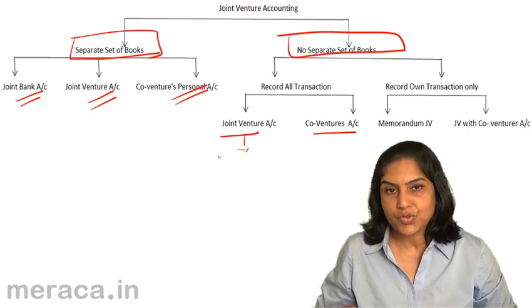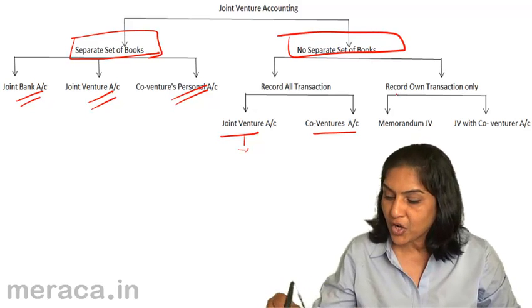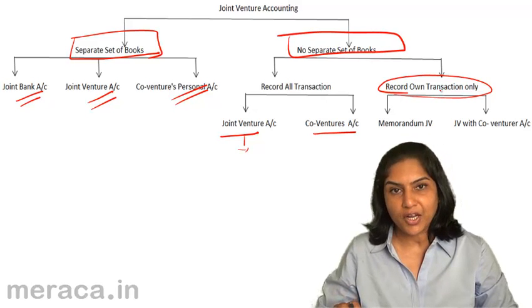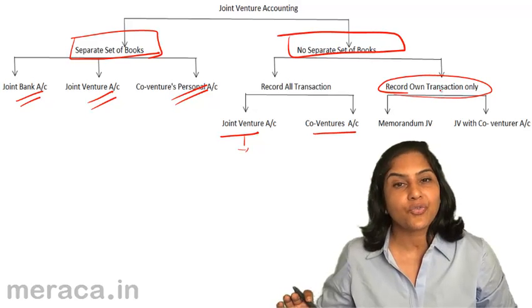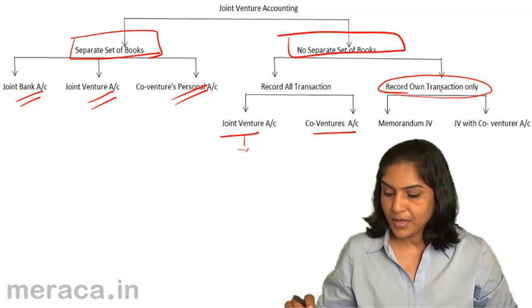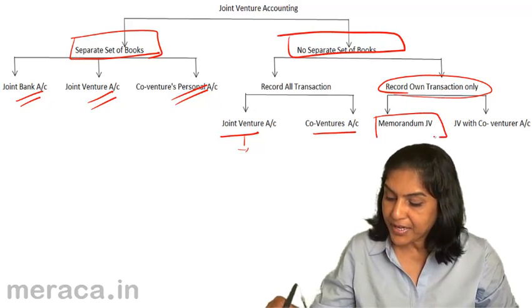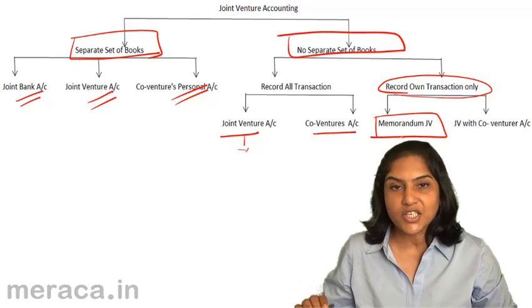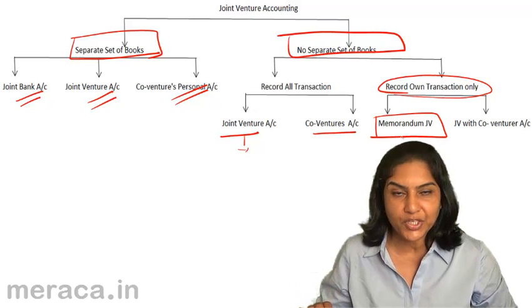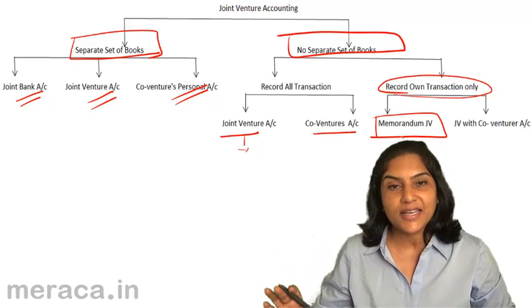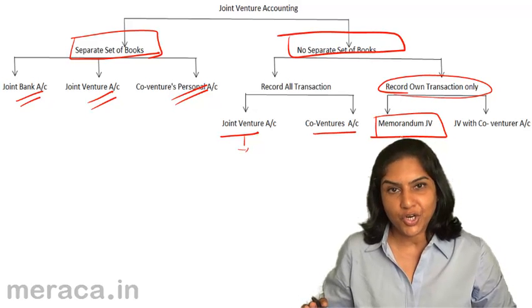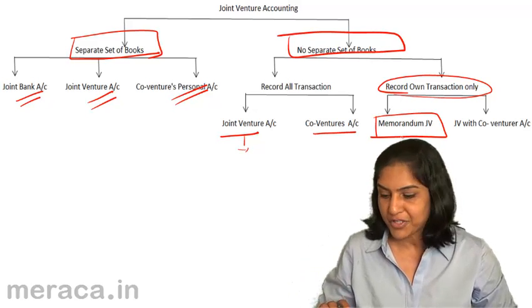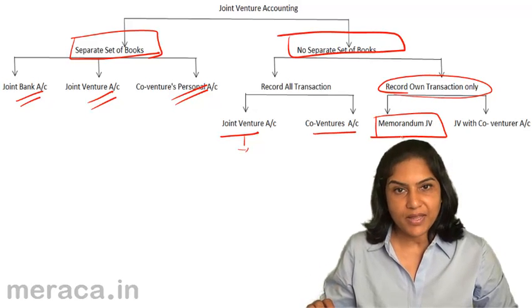Again, when a separate set of books is kept, it is also possible that a co-venturer records only his own transactions. If he receives money, he records. If he spends money on account of the joint venture, he records. He makes no record of the other co-venturer's expenses or receipts. In that case, he will need to prepare separately a memorandum joint venture account to find out his share of profit in the joint venture. This does not form a part of the double entry. It is a memorandum joint venture where he puts all the expenses on one side, all the incomes on the other side, arrives at the total profit and then ascertains his own share of profit. Now, let us discuss each of these methods one by one.